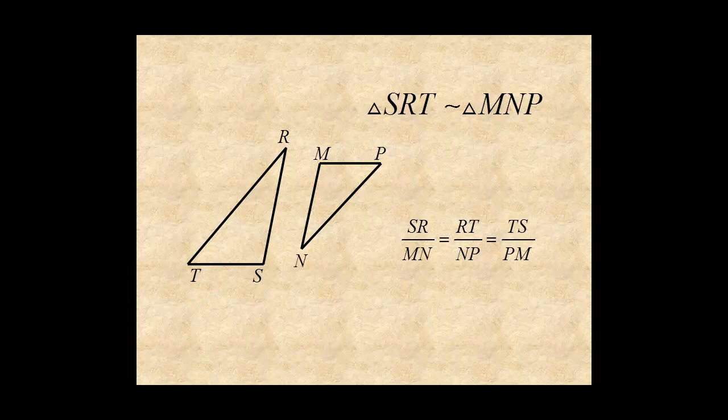The ratios of the corresponding sides are SR over MN, RT over NP, and TS over PM.